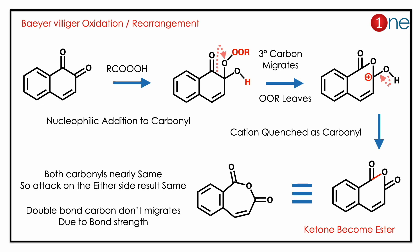By looking at the carbonyl and peroxide, you might imagine it's a Baeyer-Villiger oxidation. Here you have two carbonyls, but there is not much difference between them, so the nucleophile can attack both ways — nucleophilic addition happens.